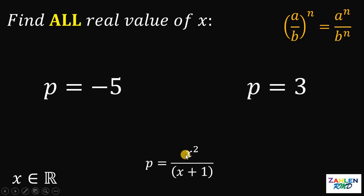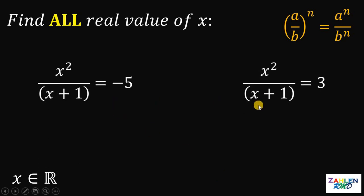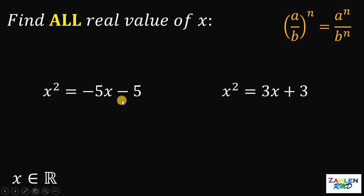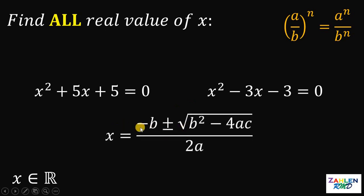Since p equals x²/(x+1), we replace all p with x²/(x+1). We want real values for x, so let's multiply all terms by (x+1). On the first equation, distributing −5, and on the second equation, distributing 3, then equating both to 0, we get: x²+5x+5 = 0, and x²−3x−3 = 0. We will use the quadratic formula: x = (−b ± √(b²−4ac)) / 2a.